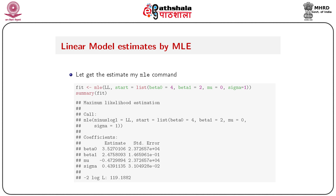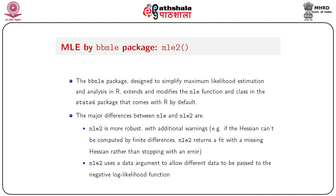Get the estimate using the `mle` command: `fit = mle(ll, start = list(beta0 = 4, beta1 = 2, mu = 0, sigma = 1))`. Then call `summary(fit)`. The coefficients for beta0, beta1, mu, and sigma are shown with their standard errors, and the minus-2 log-likelihood value of 119.2182 is also given.